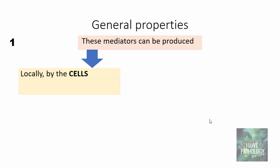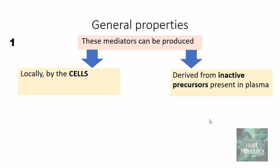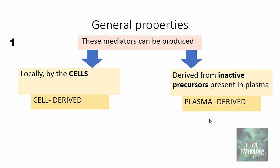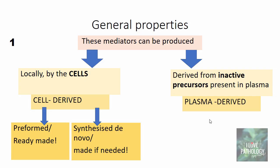What are the general properties of these chemical mediators? The first important property is these mediators can be produced locally by the cells or they are derived from inactive precursors which are present in the plasma. Those produced by the cells are referred to as cell-derived mediators, whereas those already present in the plasma are plasma-derived mediators. The cell-derived mediators can be preformed — already made and stored in granules within the cells — or they can be synthesized de novo, meaning they are synthesized when needed.